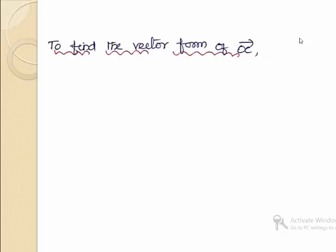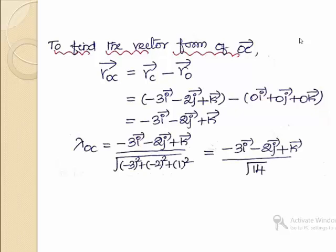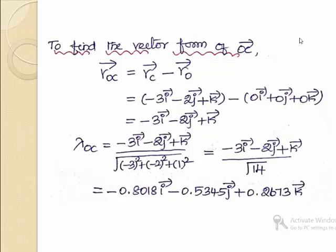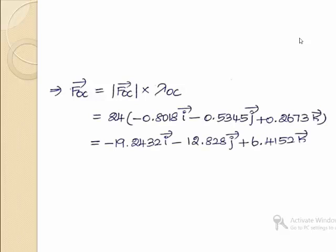For the third force along OC, the position vector ROC is -3i - 2j + k. The unit vector along OC, calculated as the position vector divided by its magnitude, gives -0.8018i - 0.5345j + 0.2673k. The third force vector FOC represented along this direction is -19.2432i - 12.828j + 6.4152k.